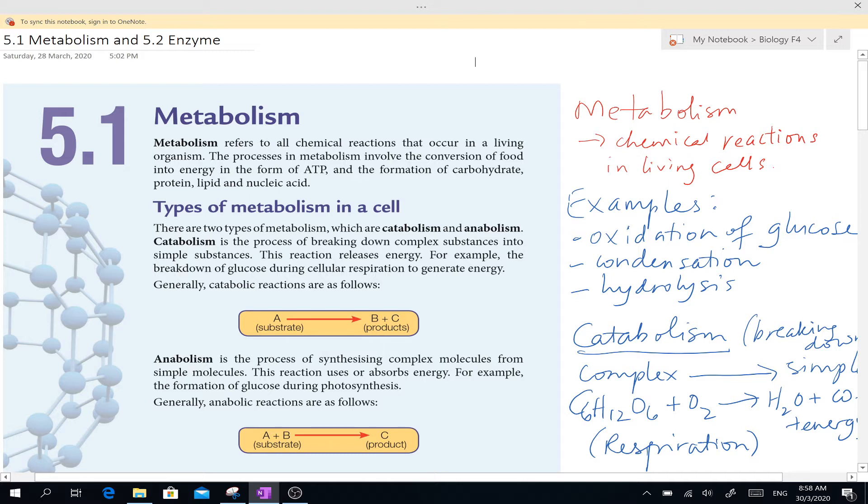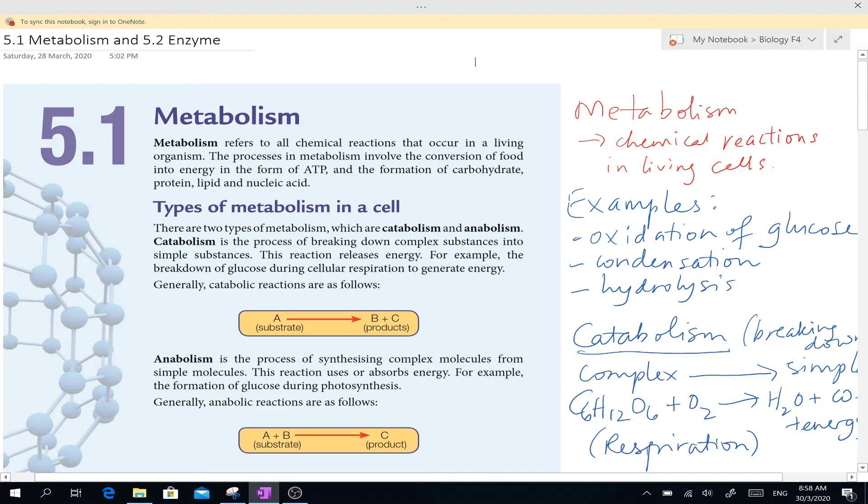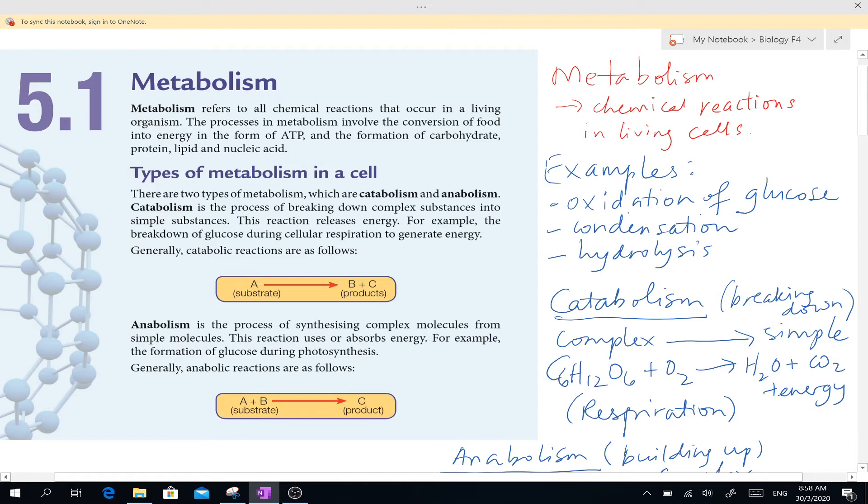Like you have metal react with acid and then you get hydrogen and salt. That one doesn't happen in living cells. You don't have naturally occurring hydrogen being produced in cells. Metabolism is the chemical reaction that happens in living cells, and examples I can give you are oxidation of glucose.